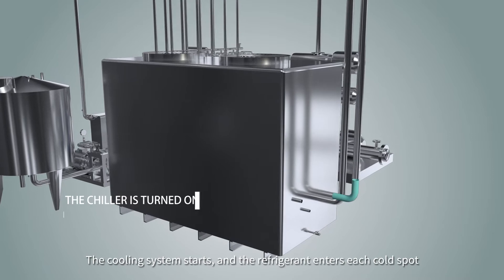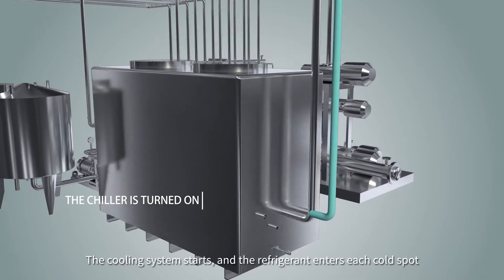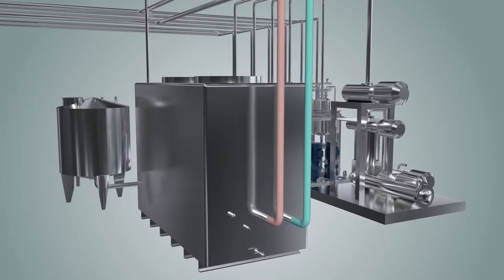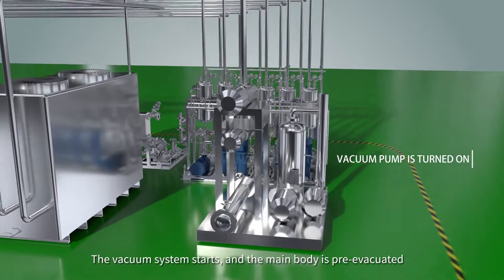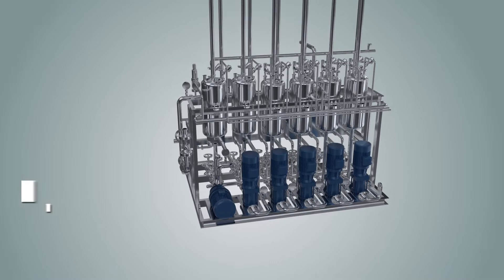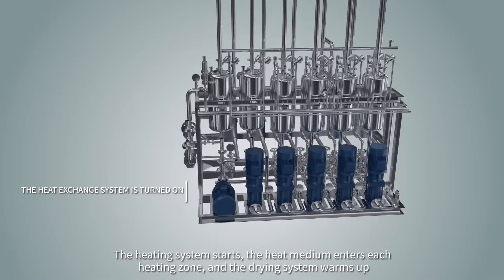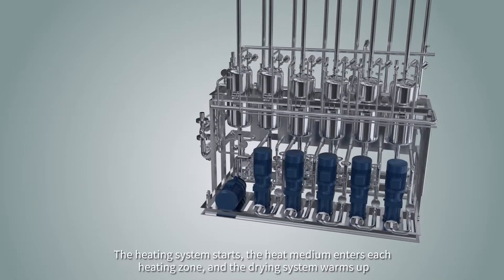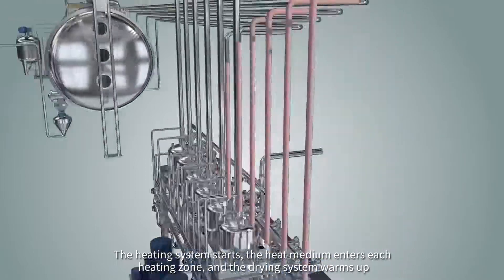The cooling system starts and the refrigerant enters each cold spot. The vacuum system starts and the main body is pre-evacuated. The heating system starts, the heat medium enters each heating zone and the drying system warms up.